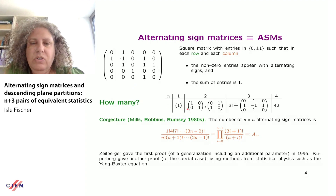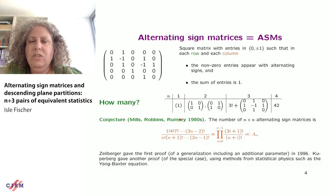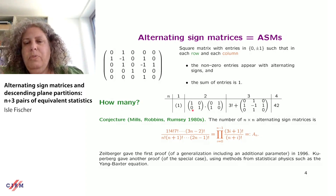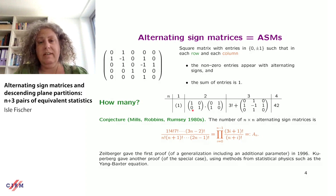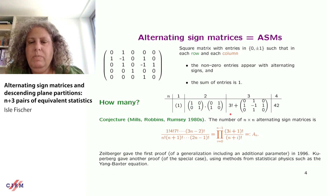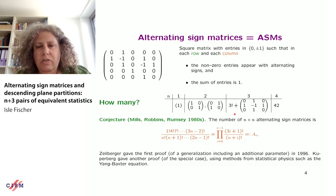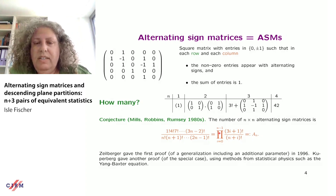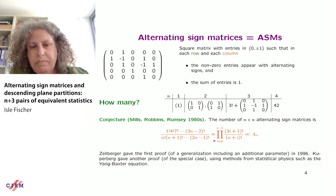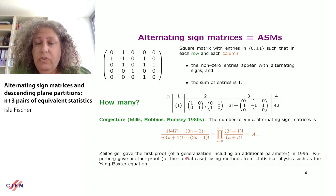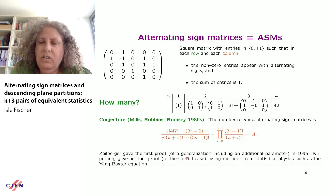How many alternating sign matrices are there? For order one there is only one. For order two there are two permutation matrices. For order three there are the six permutation matrices plus one extra with a minus one in the center. For order four there are the 24 permutation matrices and 18 matrices with at least one minus one. The number of n×n alternating sign matrices was conjectured in the early 1980s by Mills, Robbins, and Rumsey to be given by a very simple product formula.